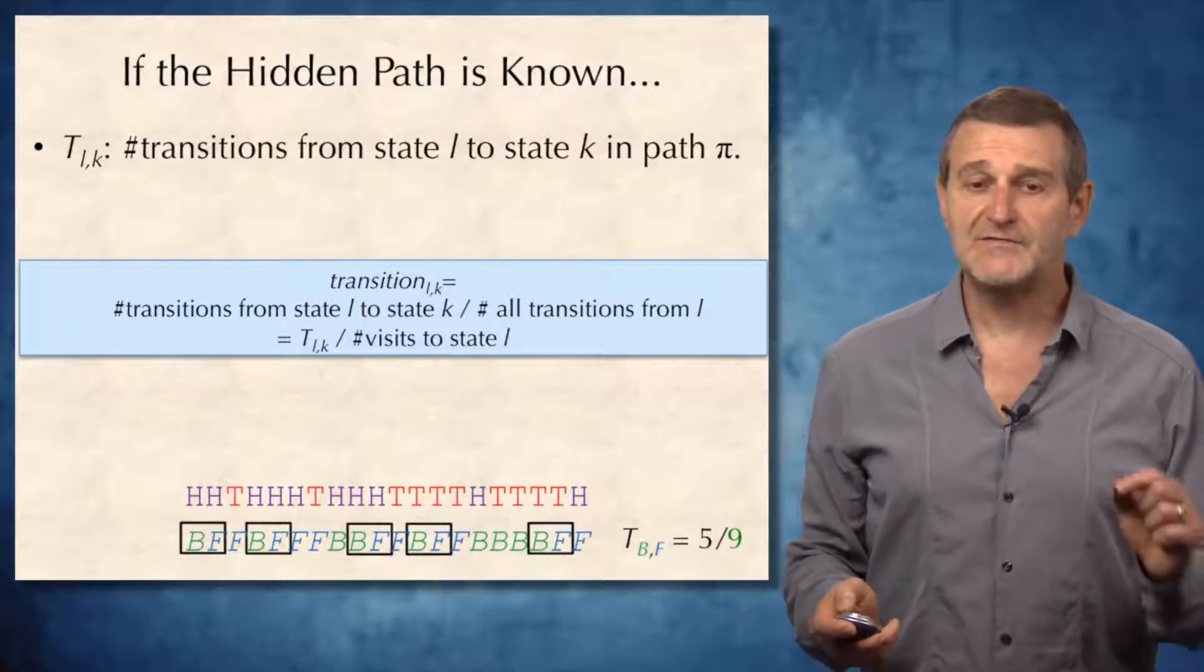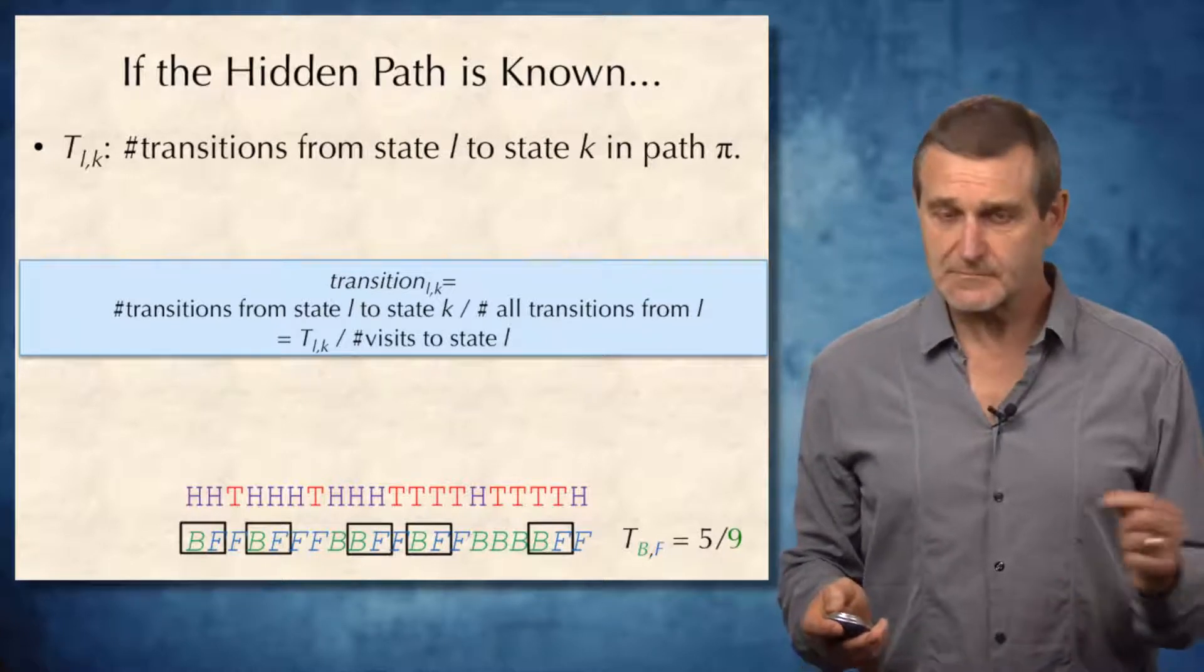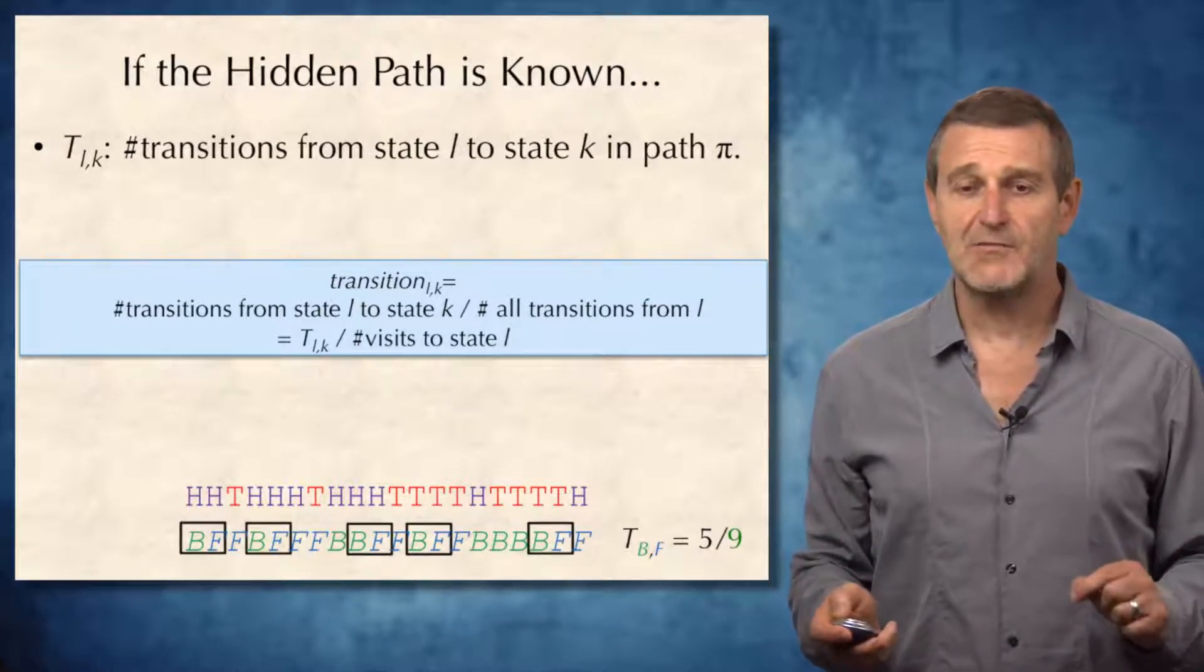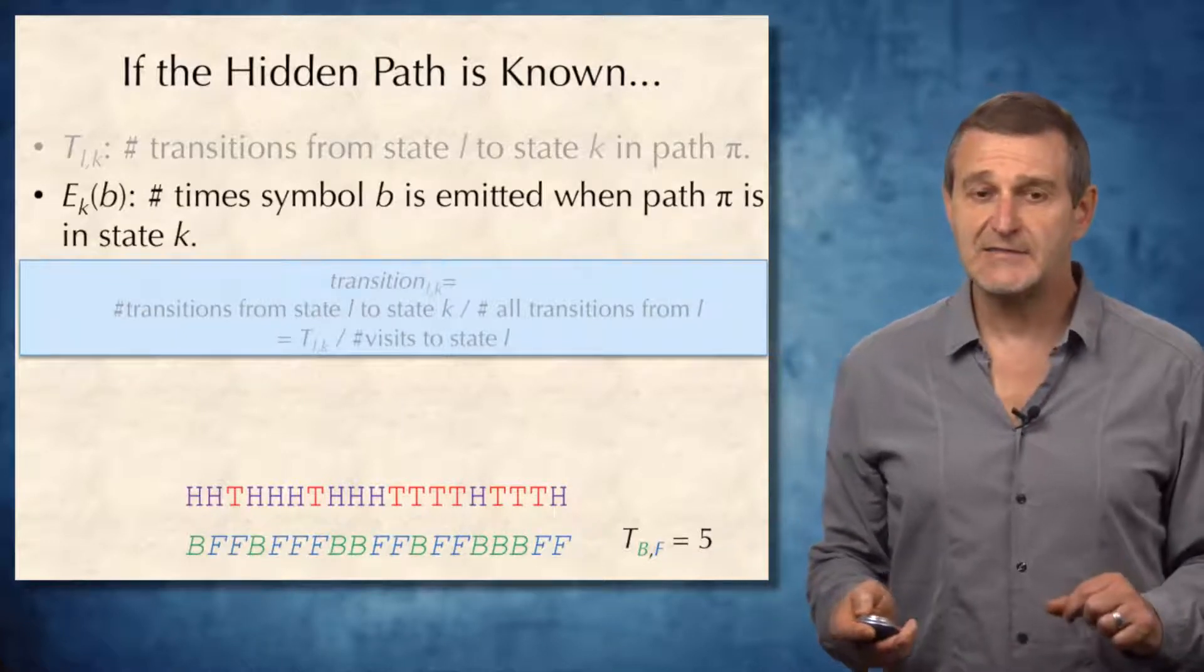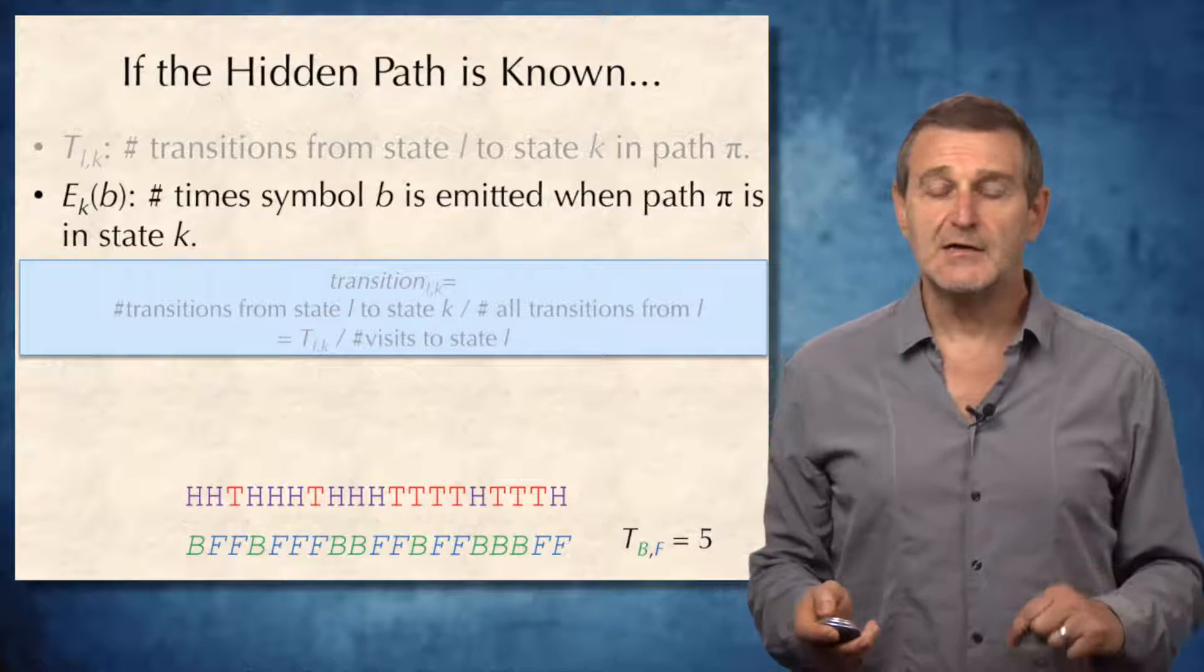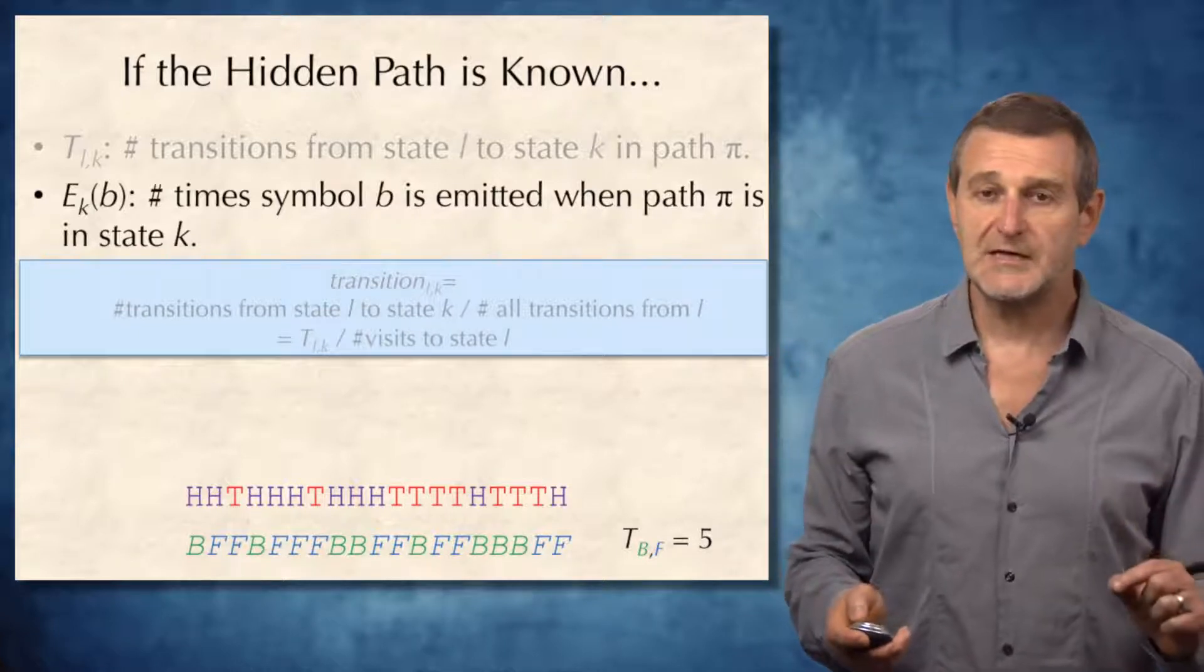Now, after we defined the number, estimated the probability of transition from state l to state k, let's now estimate the emission probability of symbol b from state k. And to do this, let's define the parameter E_{k,b}, the number of times symbol b is emitted when path pi is in state k.